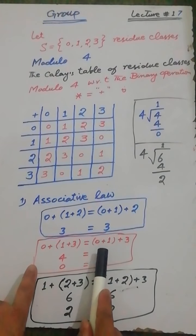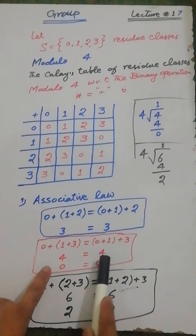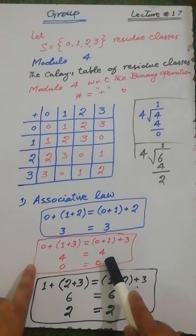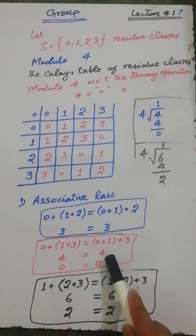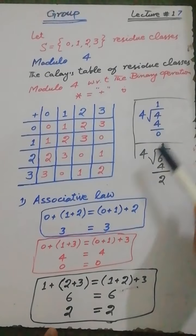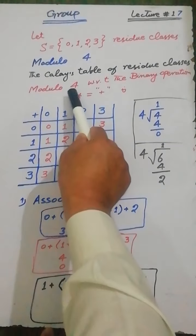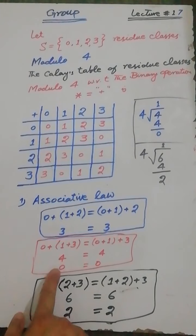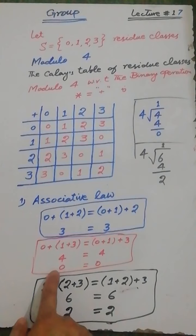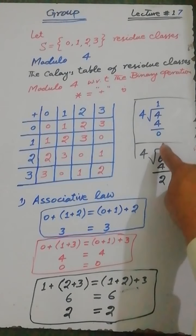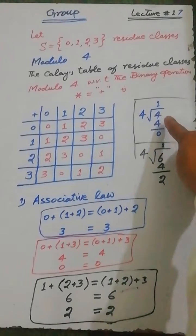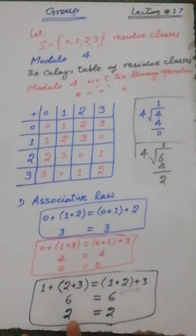For (0+1)+3 = 0+(1+3): the result on both sides equals 4. Under residue classes modulo 4, we divide 4 by 4 and the remainder is 0. Therefore, both the left-hand side and right-hand side equal 0, where 0 is the remainder when dividing 4 by 4. The condition holds.